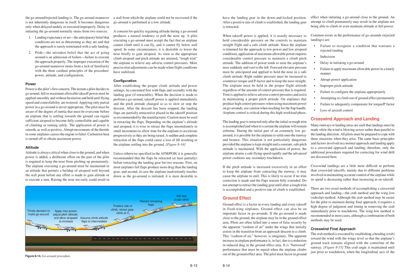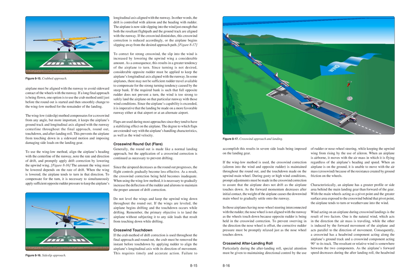The crab method is executed by establishing a heading (crab) toward the wind with the wings level so that the airplane's ground track remains aligned with the centerline of the runway. This crab angle is maintained until just prior to touchdown, when the longitudinal axis of the airplane must be aligned with the runway to avoid sideward contact of the wheels. If a long final approach is being flown, one option is to use the crab method until just before the round-out is started and then smoothly change to the wing-low method for the remainder of the landing. The wing-low (side-slip) method keeps the airplane's ground track and longitudinal axis aligned with the runway centerline throughout the final approach, round-out, touchdown, and after-landing roll, preventing the airplane from touching down in a sideward motion and imposing damaging side loads on the landing gear.